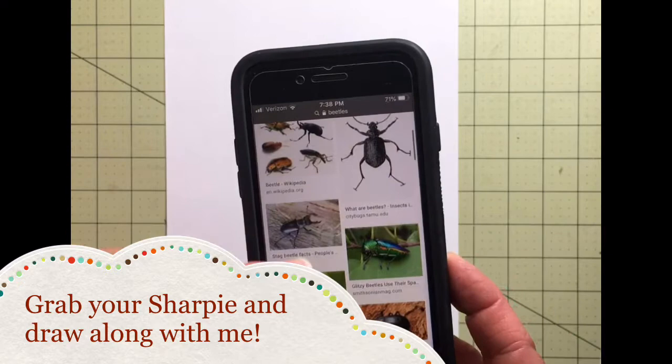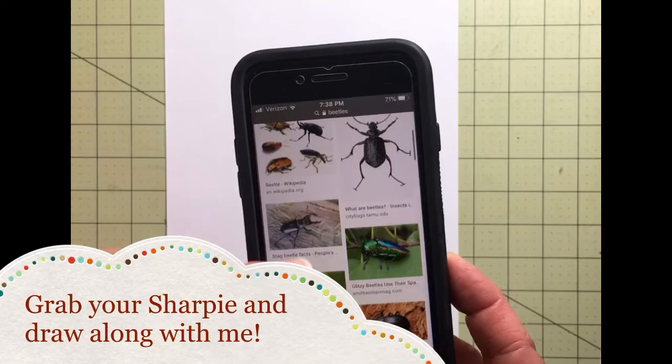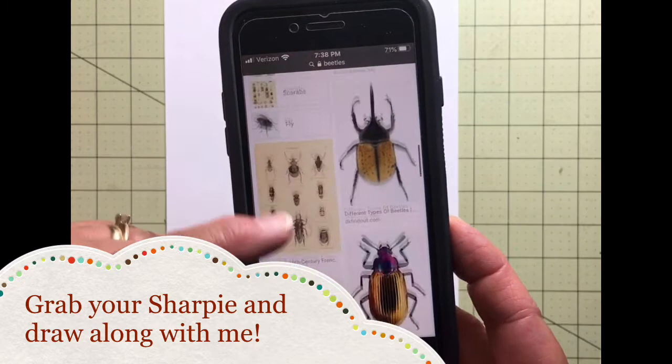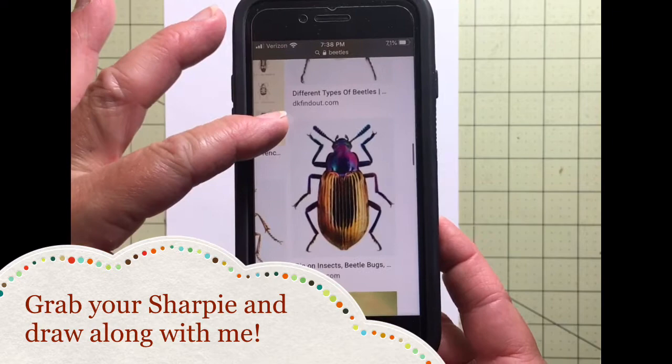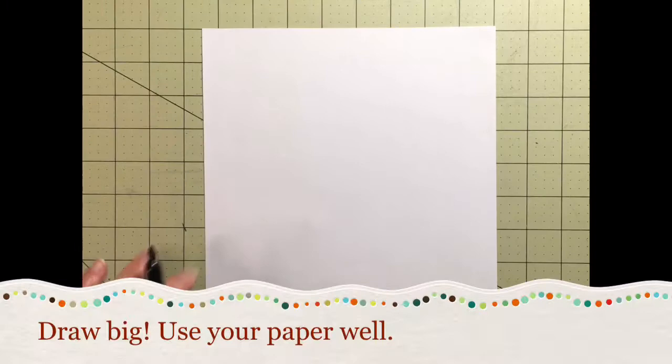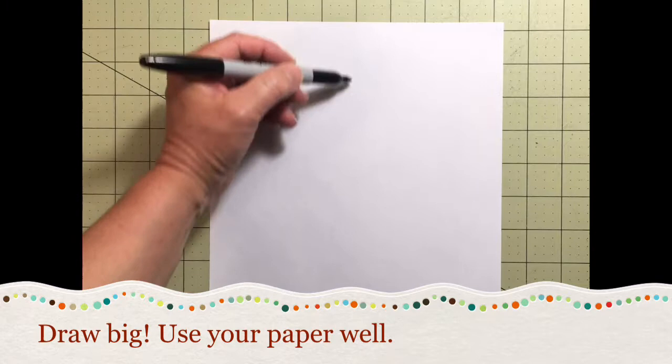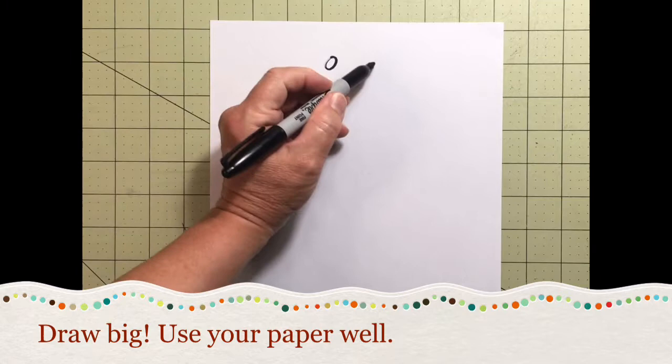I like to look at a photograph, so I've just pulled up some pictures of insects here on my phone to give me a starting point for a design. I'm going to pick this guy right here, and we're going to start at the head. So to start our insect, at the top of the page, we're going to make some circles for the eyes.